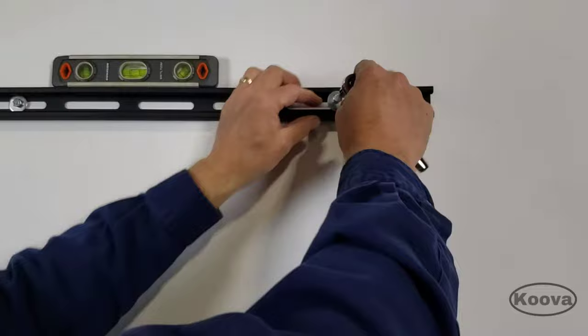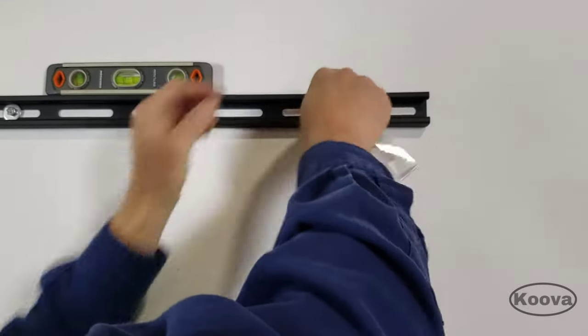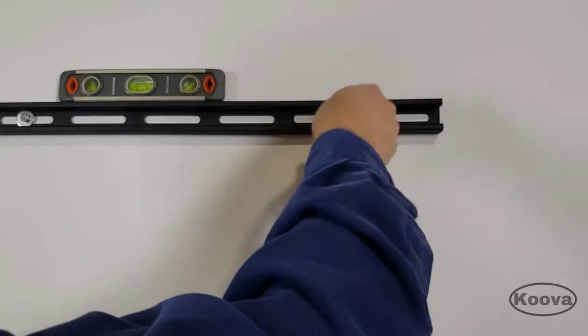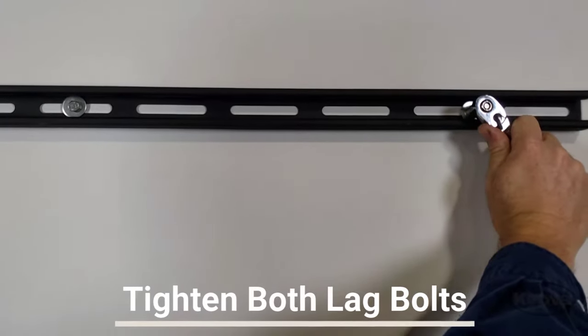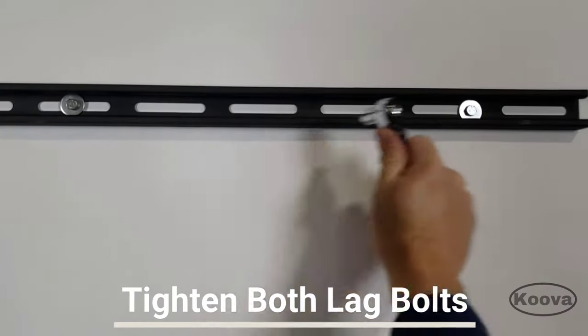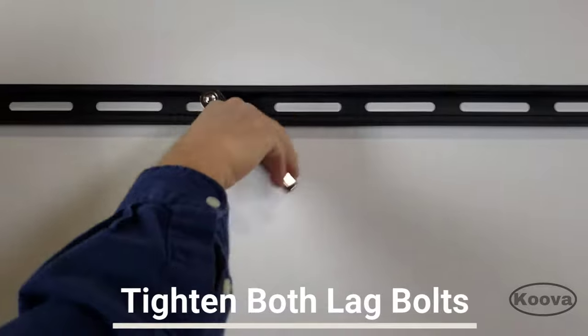With the second hole drilled, just tighten up your second lag bolt. Snug your second lag bolt, and then come back and finish snugging the first one.